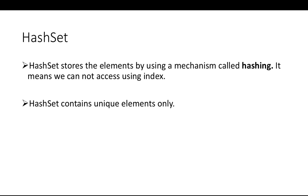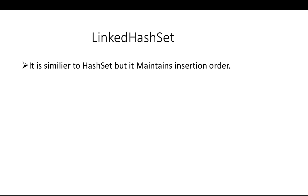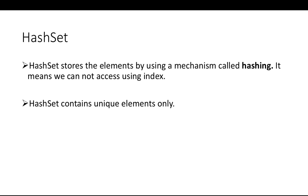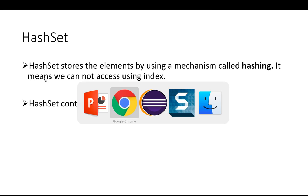LinkedHashSet is similar to HashSet but it will maintain the insertion order. When you create a HashSet it will not maintain insertion order — every time it will give values in random order. But with LinkedHashSet you will get the insertion order. The last one is TreeSet — TreeSet maintains ascending order. So if you give values like 15, 31, 99, it will maintain ascending order.